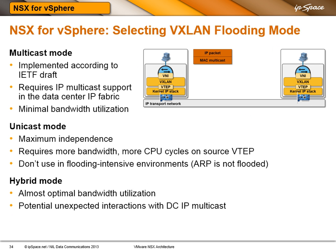Which mode should you select? If you are concerned with interoperability with third-party equipment, use multicast mode — it follows the IETF draft, but requires IP multicast support in the transport network. Unicast mode makes you independent from the transport infrastructure but uses more bandwidth and CPU cycles on source and proxy VTAPs, so avoid it in flooding-intensive environments. Note that ARP is no longer flooded because the layer 3 forwarding module in the NSX kernel replies to all ARP requests directly.